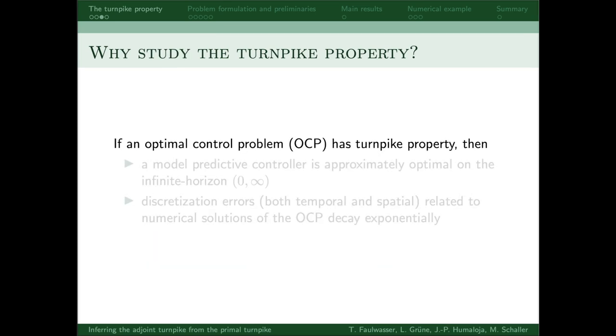So I already touched upon this question on why the turnpike property should be studied, and indeed one of the main reasons is its application to model predictive control. Namely, if the OCP has the turnpike property, then a model predictive controller is approximately optimal on the infinite time horizon.